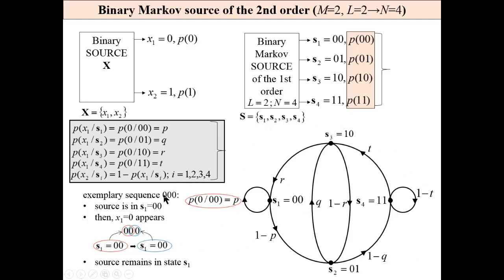If we have a sequence of three 0s, then we are moving from state 00, the red circle, to 00, which means we stay in state s1, and probability is p.